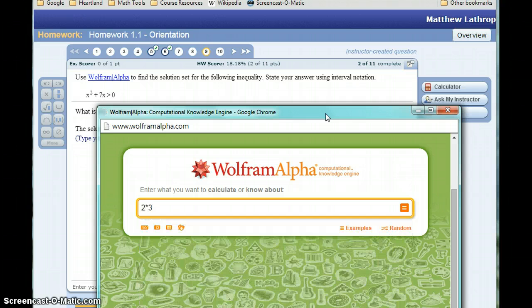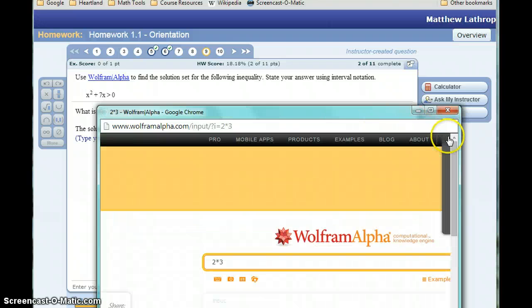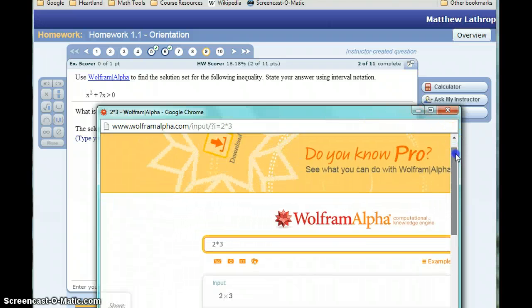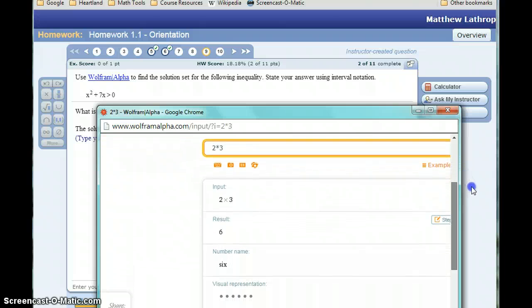For instance, you could type something like 2 times 3 if you wanted to complete just a simple multiplication operation. It's always going to output a number of different answers, answers in different forms. In this case, what we would probably care about is that 2 times 3 is 6.